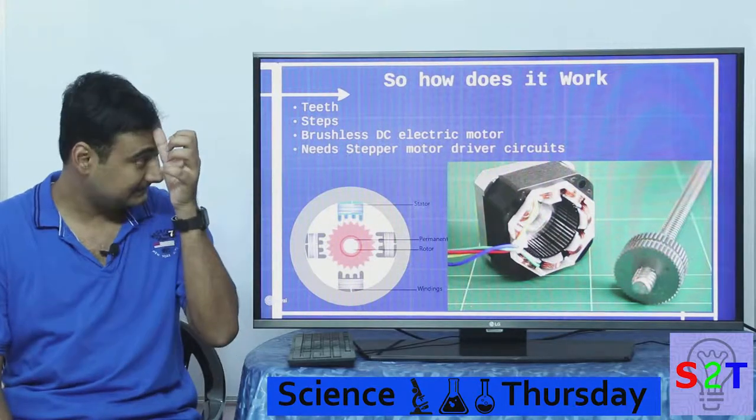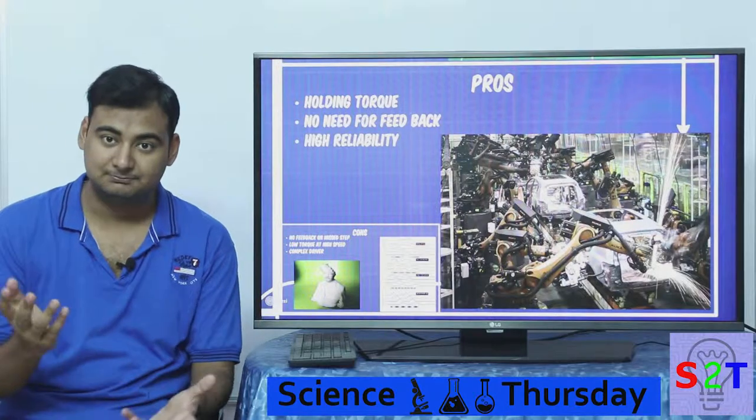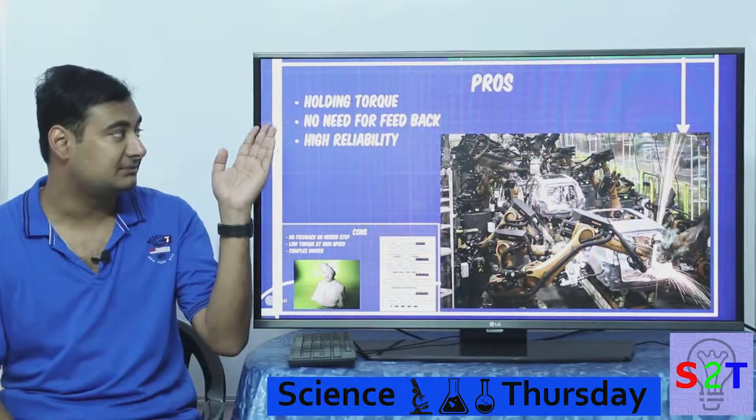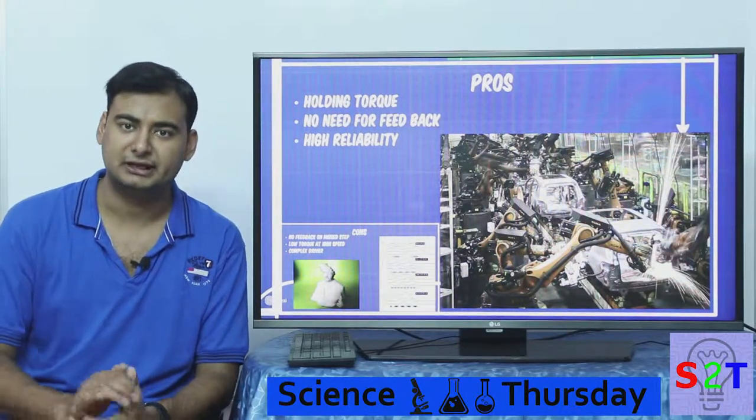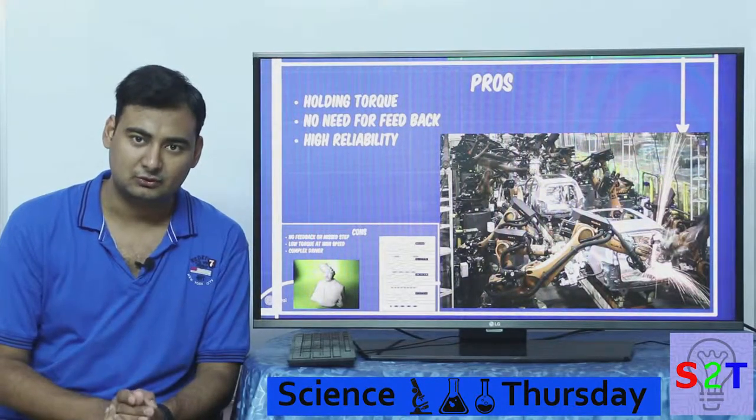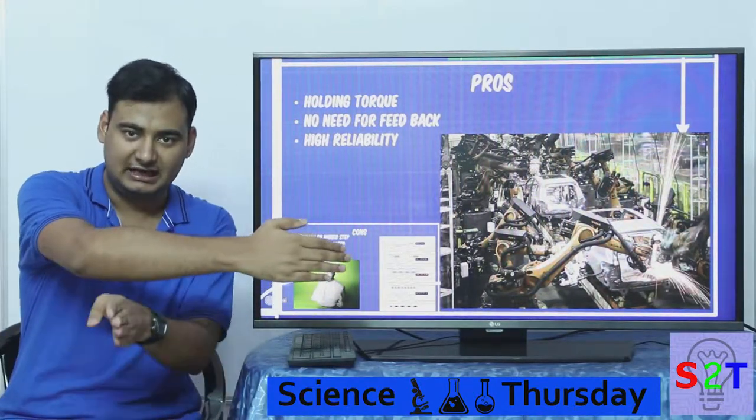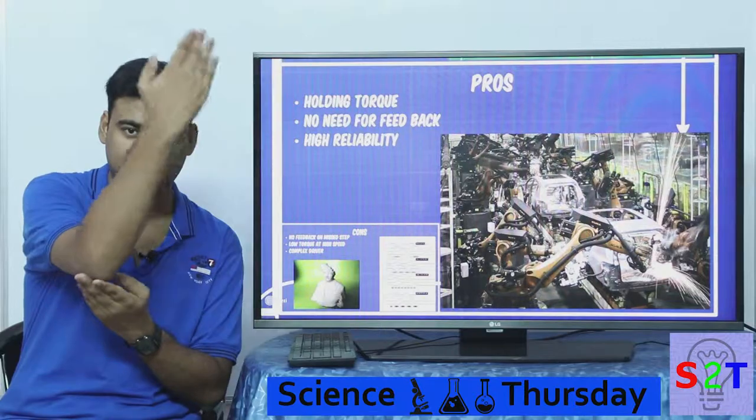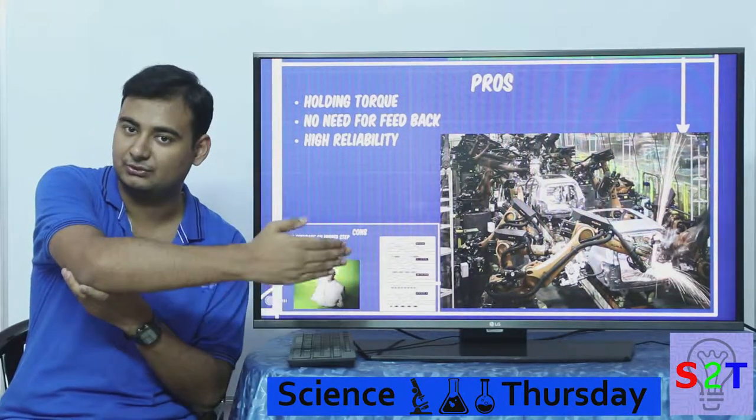Now what are the pros of this method? One very simple, I have put at the top, is what's called holding torque. Now what you have to understand about holding torque is imagine you have a robotic arm that is going like this. You have an axle that is rotating up and down.